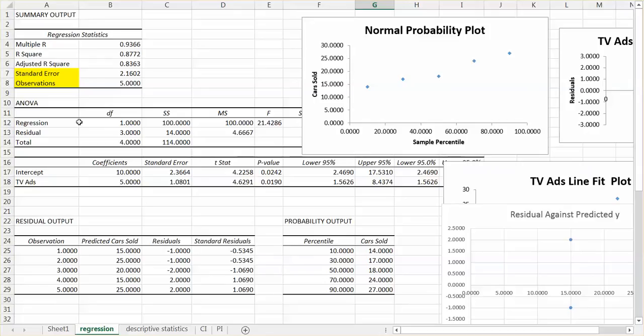The first part is regression statistics. The second part is another table. And the third part is our estimated regression equation.